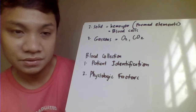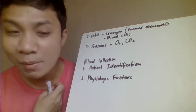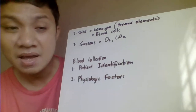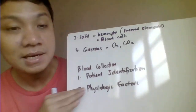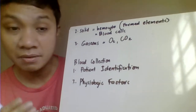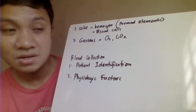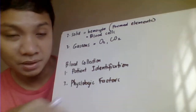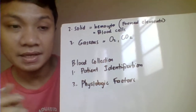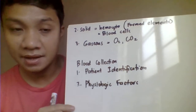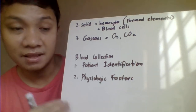If the patient is unconscious or is a baby, you cannot ask for their name directly. Do not rely solely on the name tag or hospital bracelet. Instead, ask the relatives, the nurse in charge of the ward, or the doctor in charge to confirm the proper identity of the patient. Finally, physiologic factors are also very important to consider, as they can significantly affect test results.